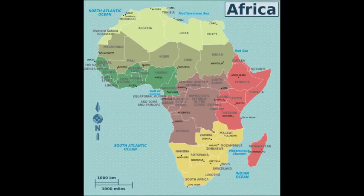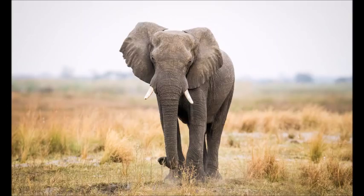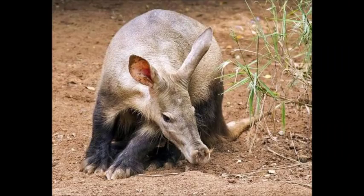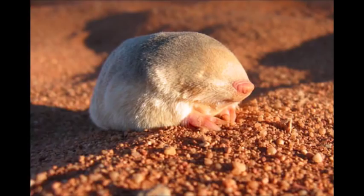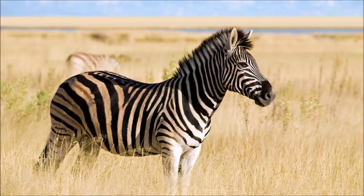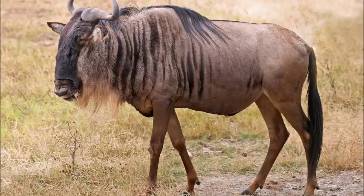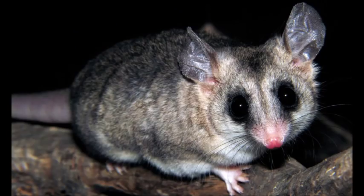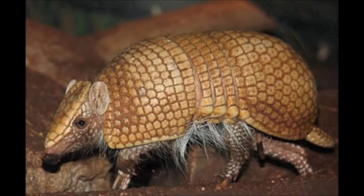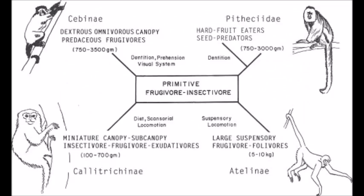Africa housed a clade called Afrotheria, which includes elephants, hyraxes, aardvarks, elephant shrews, golden moles, and tenrecs. Laurasiatherians such as horses, rhinos, hippos, and wildebeests came to Africa later. Similarly, South America was the evolutionary hotspot for marsupials, notoungulates, xenarthrans, litopterns, and platyrrhines, and again Laurasiatherians came to the continent later.